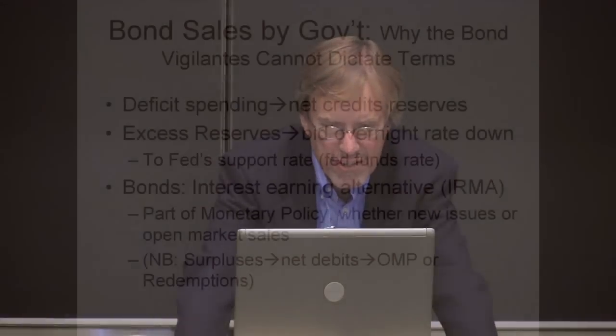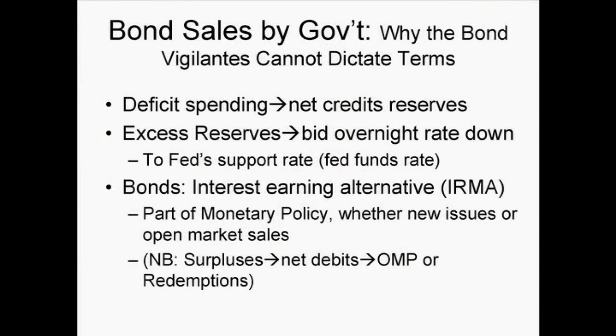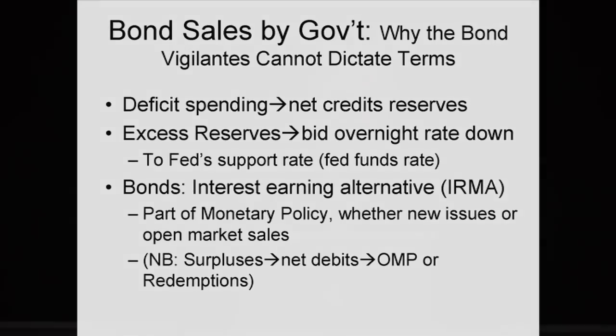The government creates its own money every time it spends. It never needs to borrow. In fact, if you look at the balance sheets, there is no way that the currency issuer can borrow its own currency. Deficit spending leads to net credits to the banking system reserves, which will normally lead to excess reserves. If we're running a one trillion dollar budget deficit, by identity we're creating a trillion dollars of bank reserves. In normal times banks don't want to hold excess reserves, so they offer them in the overnight Fed Funds Market, driving the overnight interest rate down — potentially to zero. So what the Fed does is sell bonds to drain excess reserves.